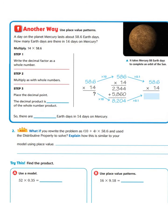Now let's take a look at another word problem. A day on the planet Mercury lasts about 58 and 6 tenths Earth days. How many Earth days are there in 14 days on Mercury? Let's pull out the information we need: Mercury lasts about 58.6 Earth days, and we need to find how many days there are in 14 days on Mercury. So we are going to multiply 14 and 58 and 6 tenths.